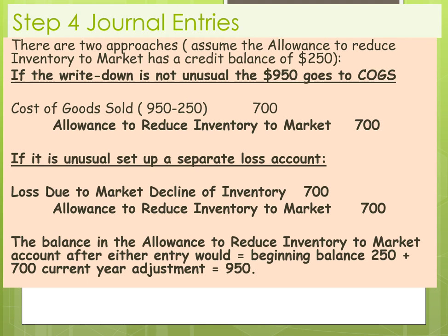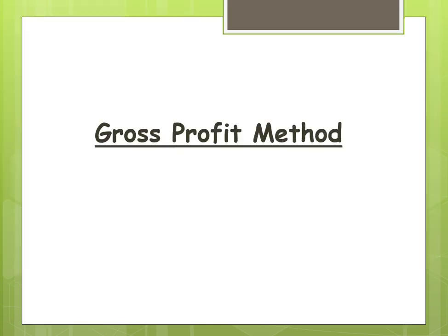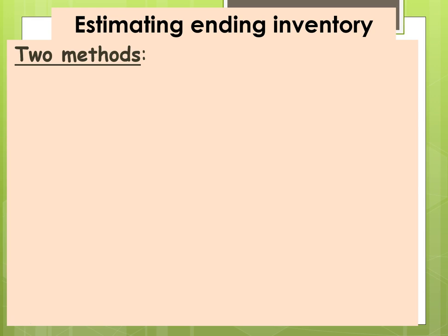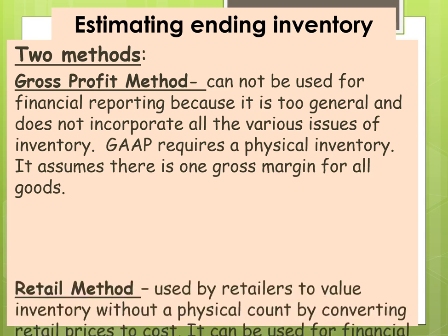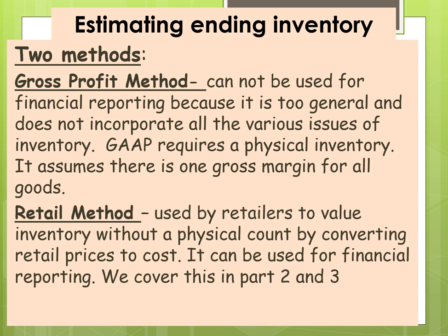Now we're going to look at the last part of this presentation: the gross profit method. This is a pretty easy one to use. It can only be used to estimate in internal reporting — it cannot be used on the financial statements. There are two methods for estimating ending inventory. The gross profit method cannot be used for financial reporting because it's too general; it doesn't incorporate all the various issues associated with inventory because it assumes a flat gross profit rate. GAAP requires a physical inventory and this method assumes there is one gross margin for all goods. The retail method is used by retailers and usually they don't have to do a physical count — we'll go over that in parts two and three of this presentation.